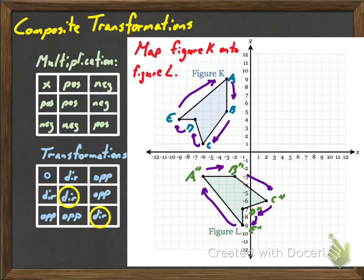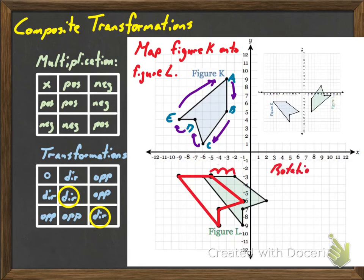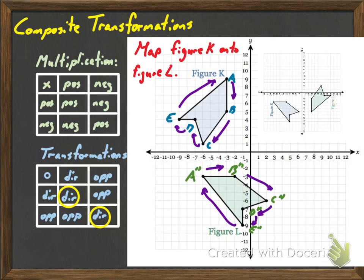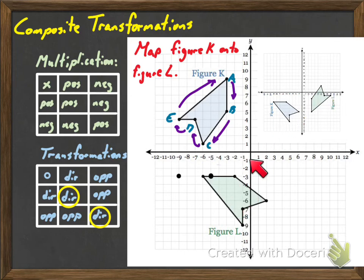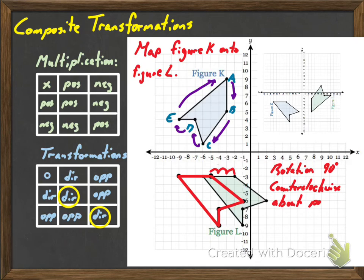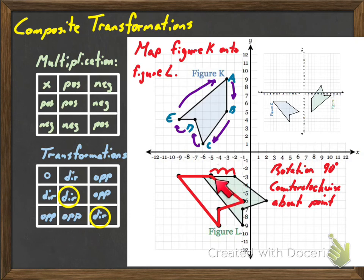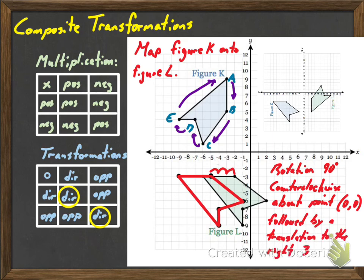It looks to me like it's some sort of rotation. So I'm going to actually turn my paper — whenever I see this sort of thing, and I know it's hard on Delta Math because you can't really do that, maybe you could turn your computer screen. If we turn it, notice it's actually definitely some sort of rotation because this figure looks like that figure over here. So let's go ahead and rotate it. It's a rotation 90 degrees counterclockwise about the point (0, 0), but then I need to slide this thing to the right three. So it was a rotation 90 degrees counterclockwise, followed by a translation to the right three.